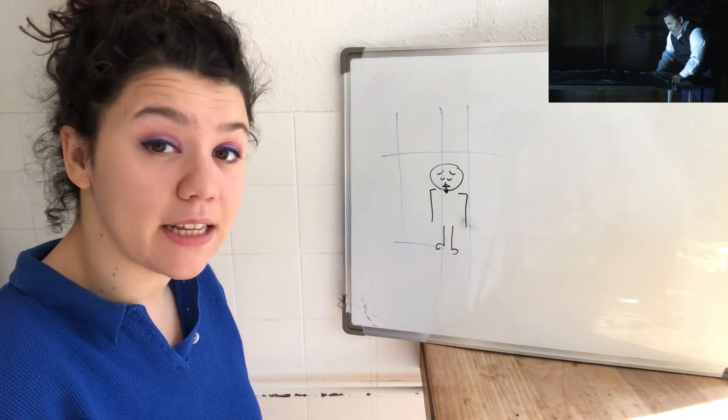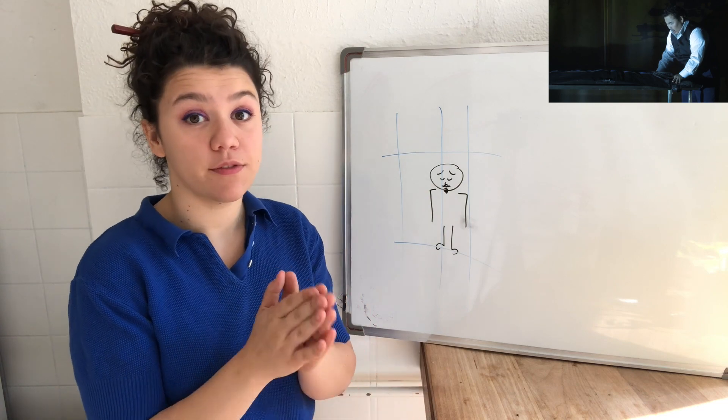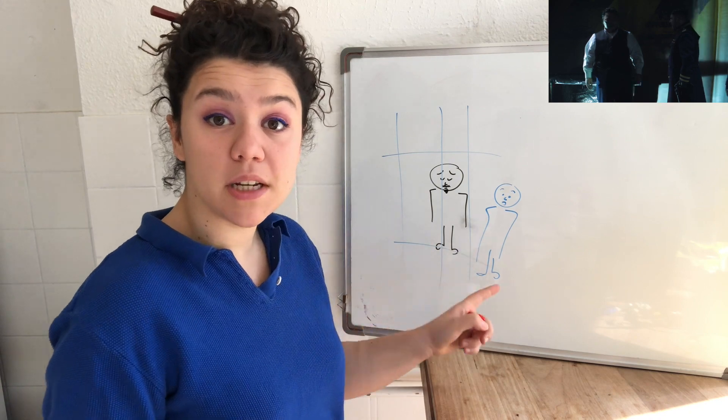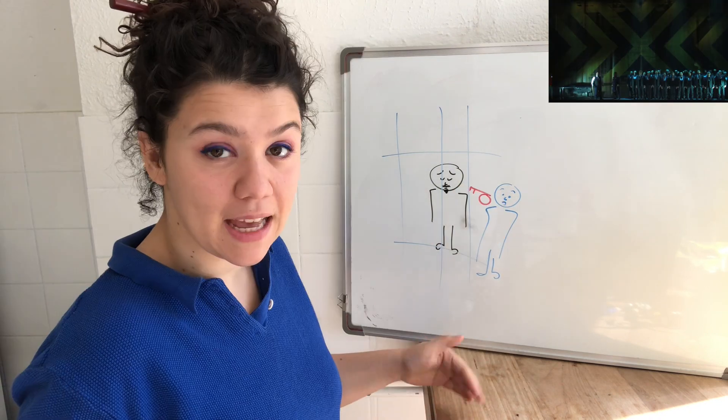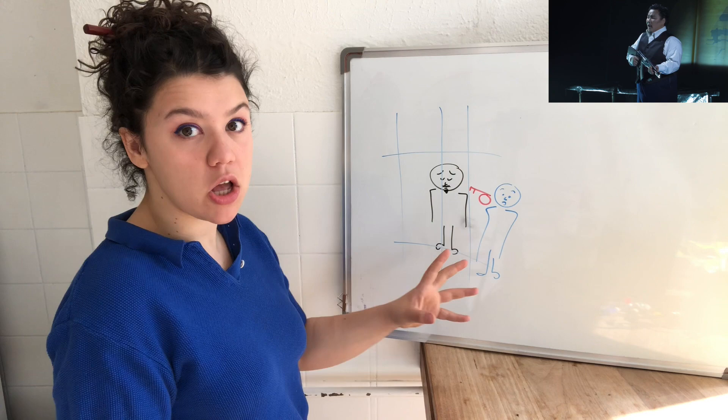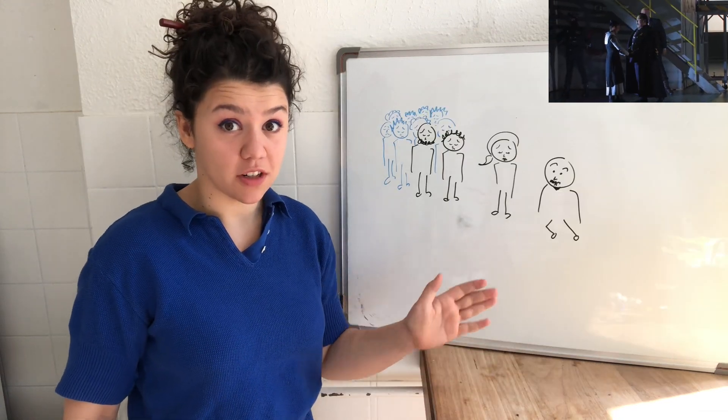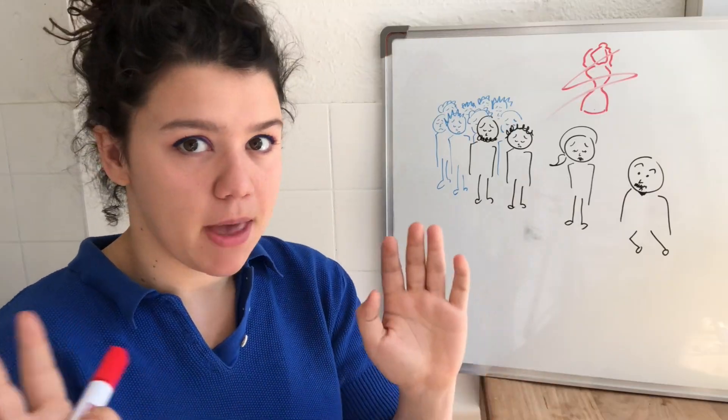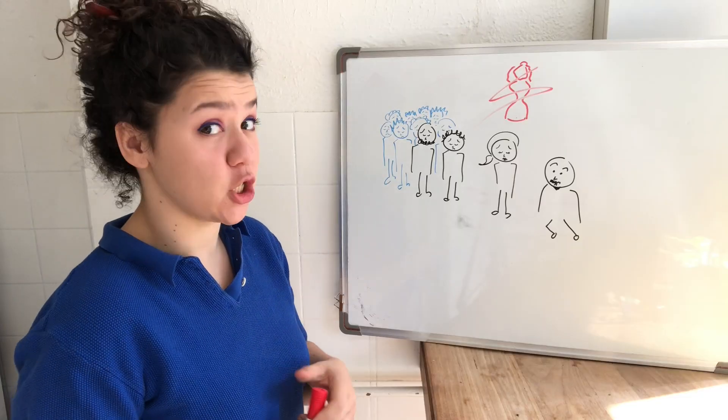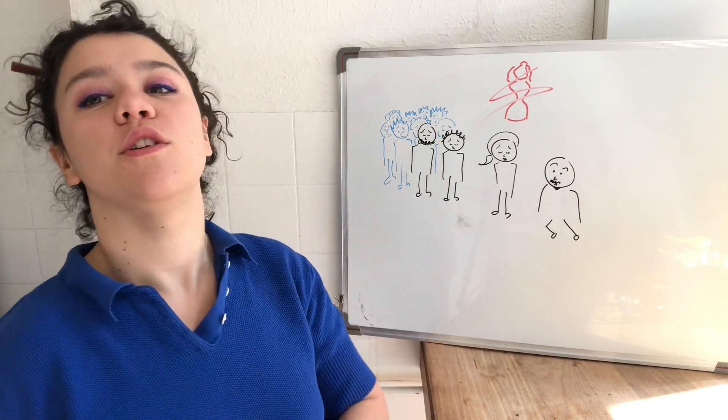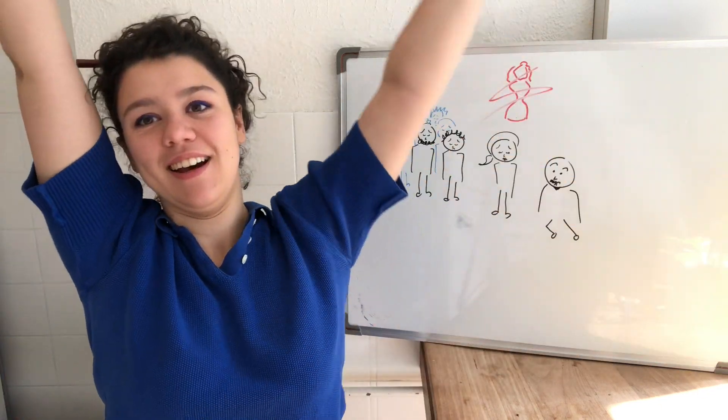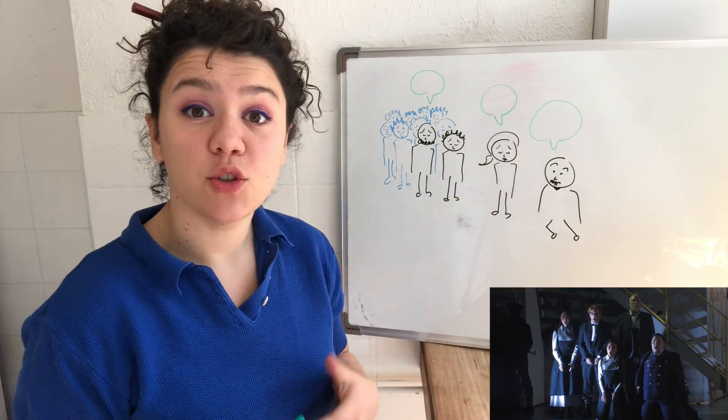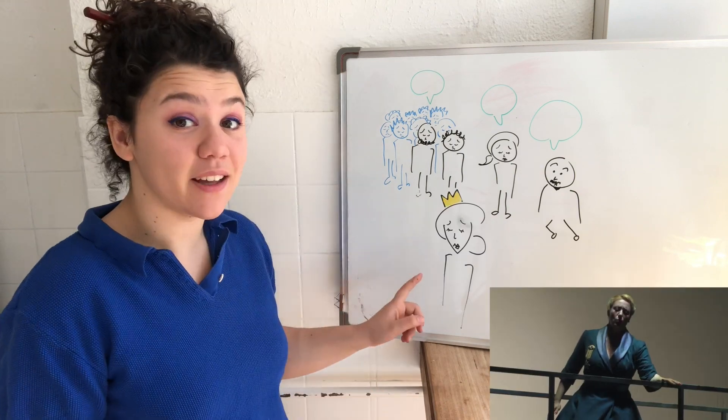Nabucco is in his jail cell and he prays God to save Fenena, who is currently walking towards her execution with the rest of the Hebrews. A loyal minister comes to free up Nabucco and helps him escape and Nabucco runs to save Fenena. Nabucco arrives at the execution and as he does that, the statue of Babylon's idol is suddenly destroyed by magic. Everyone understands that it's a terrible sign and they stop the execution. All the Hebrews are saved. All the Hebrews, Fenena and even Nabucco start praying to God to thank him for this miracle.